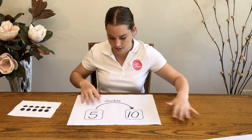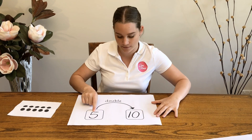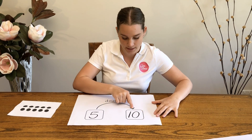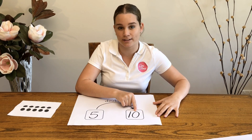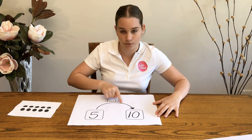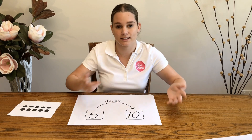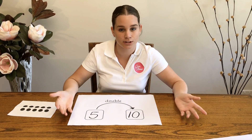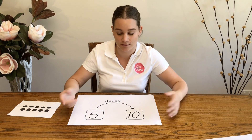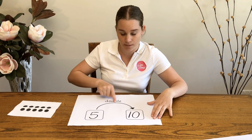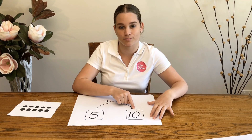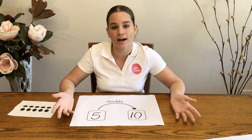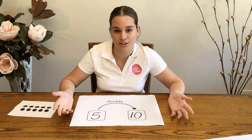Two rows of five is ten — it's double five. That's what this diagram shows: five, double five is ten. Double five is the same as two times five. It's doubled!